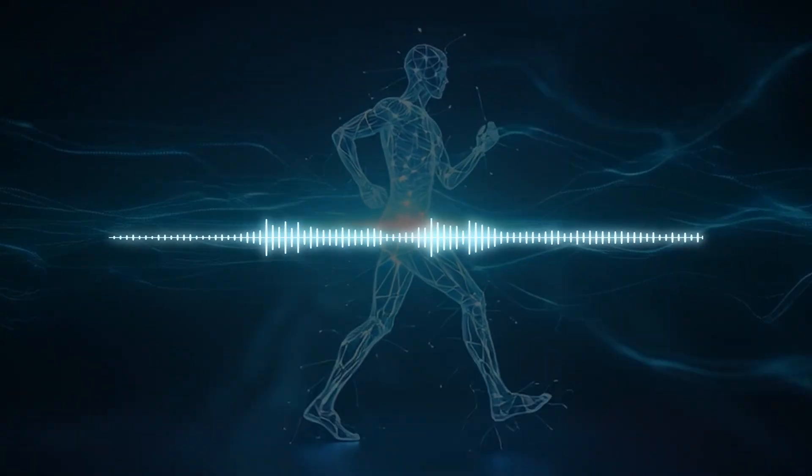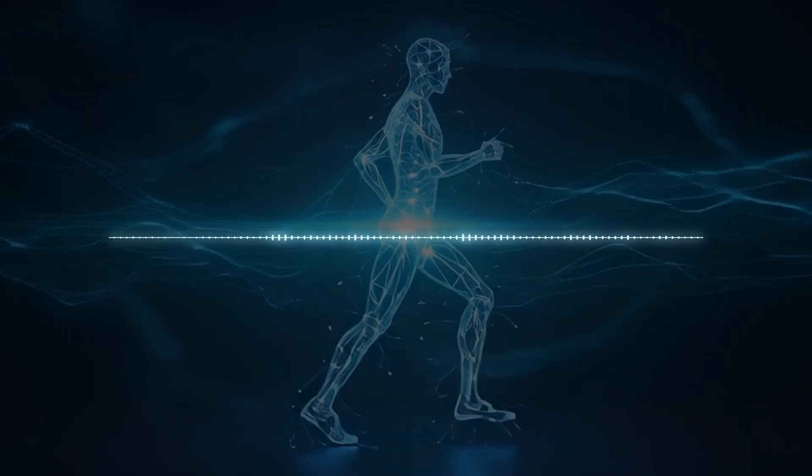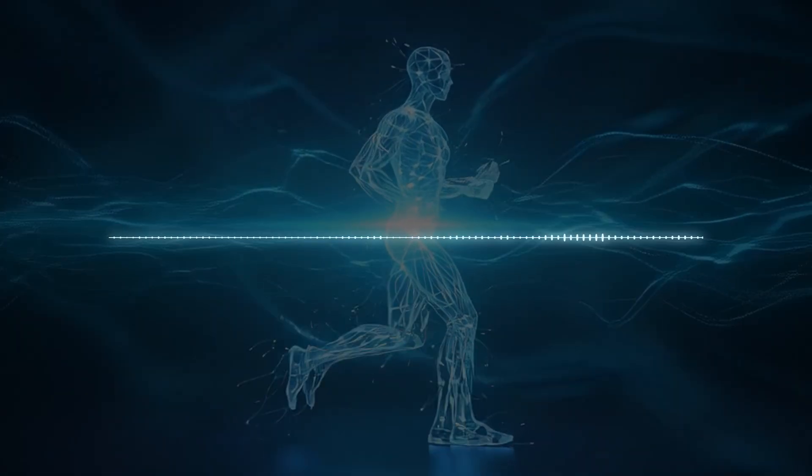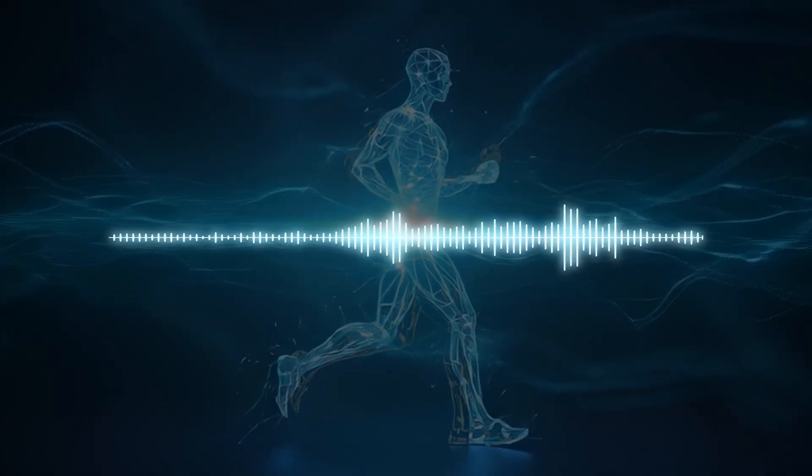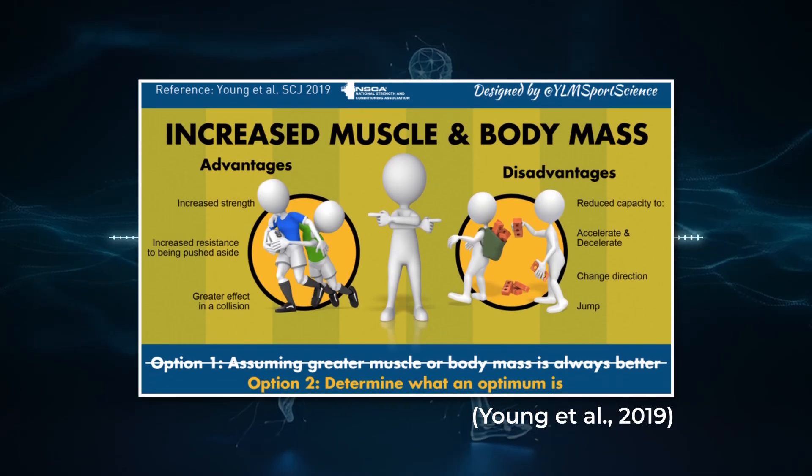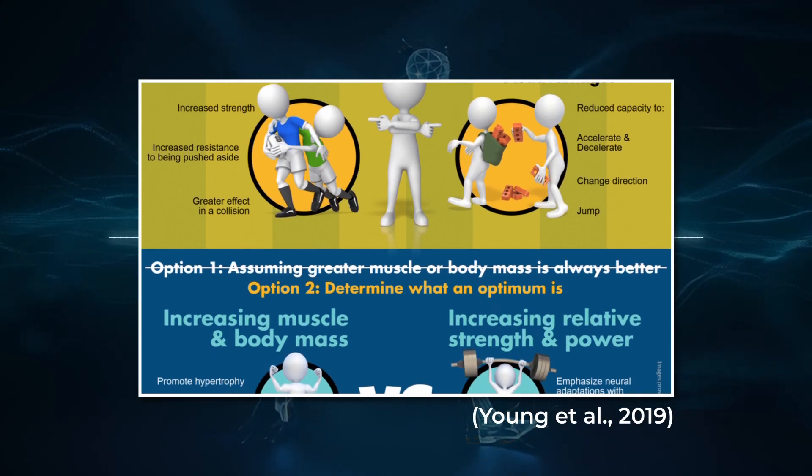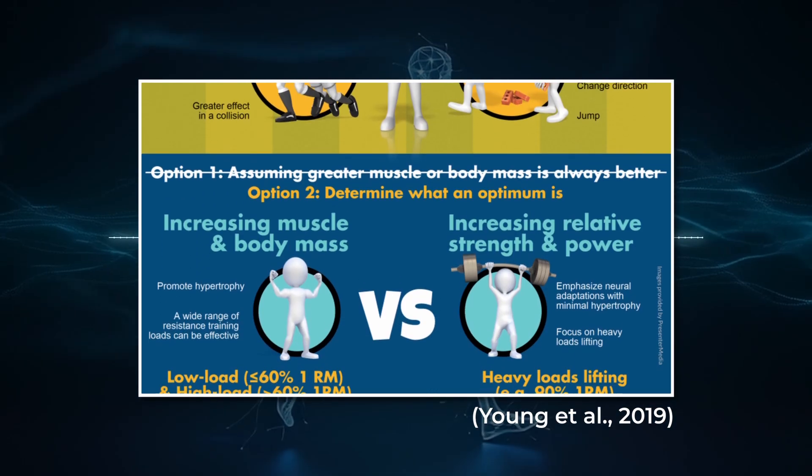Second, the study reveals a critical insight about body composition. For athletes with higher BMI, training programs must balance absolute power with relative performance efficiency. Adding mass without proportional strength gains actually reduces your power to weight ratio, making you less effective.